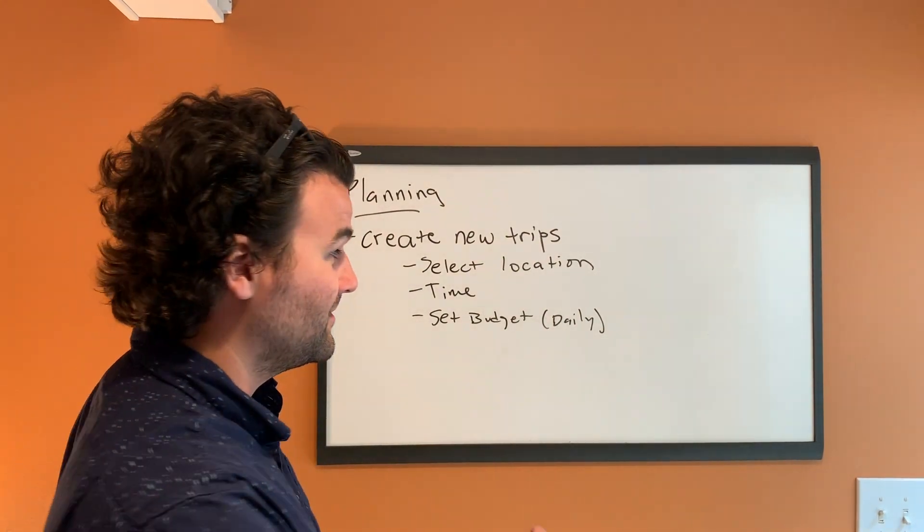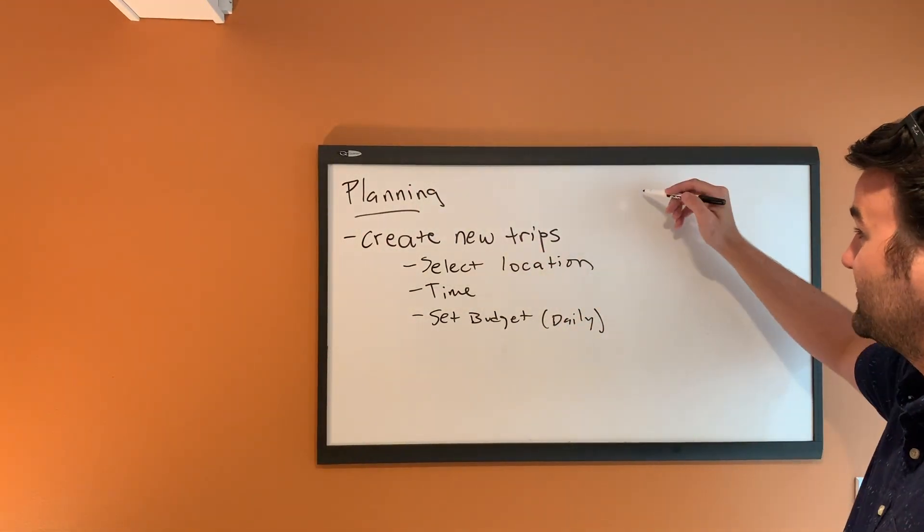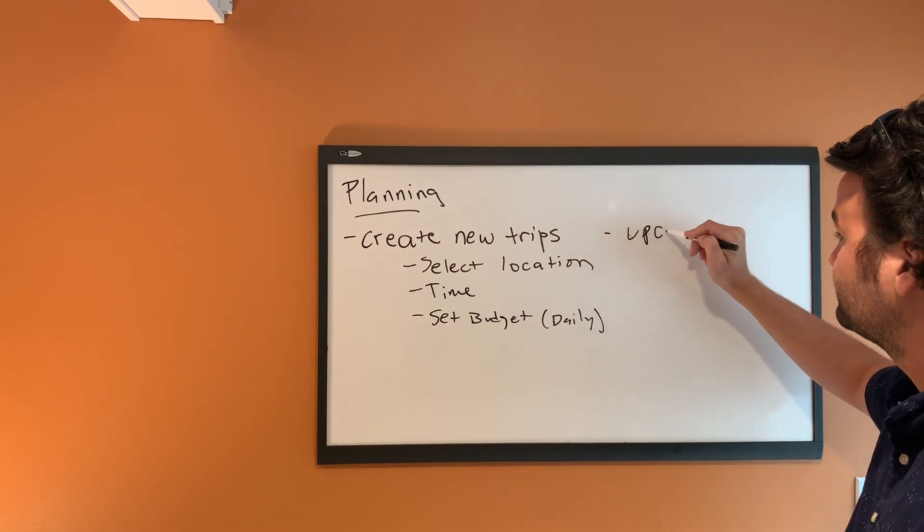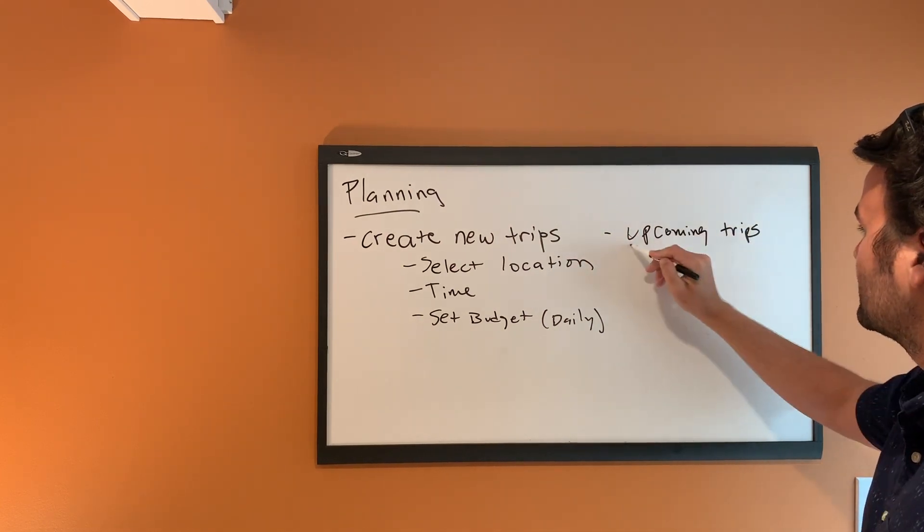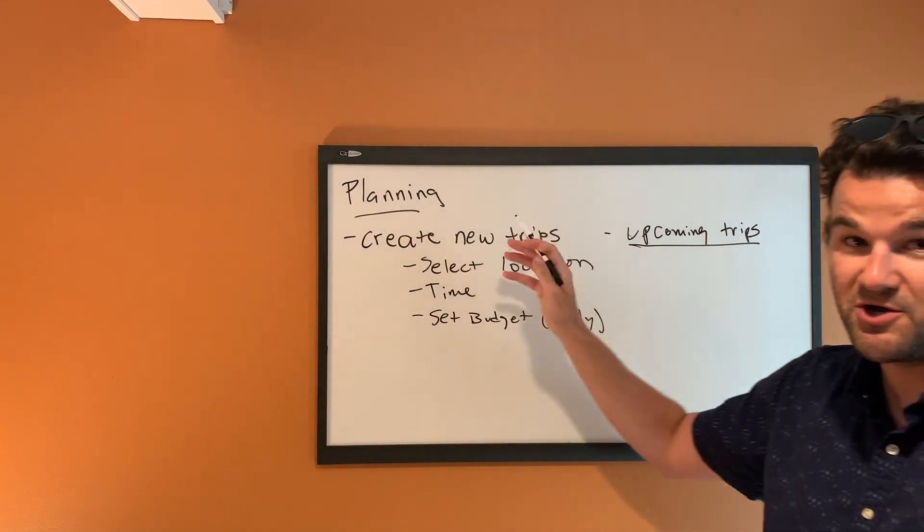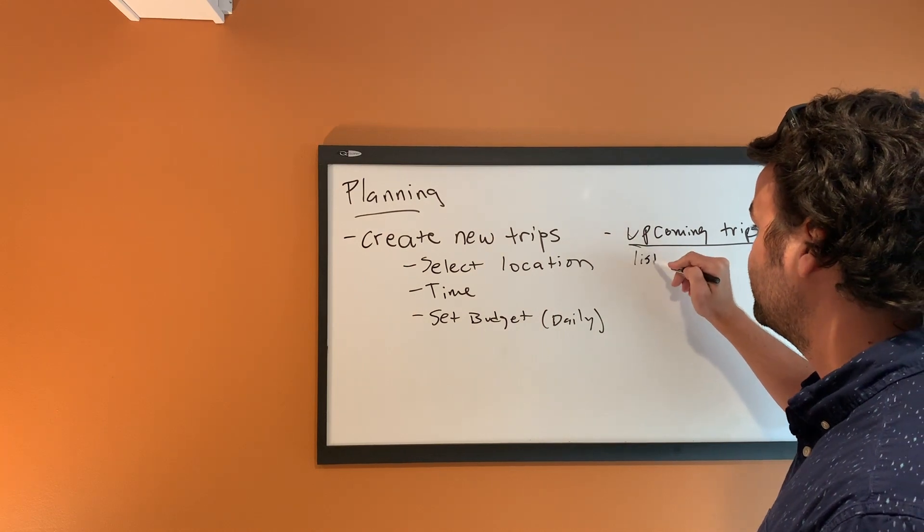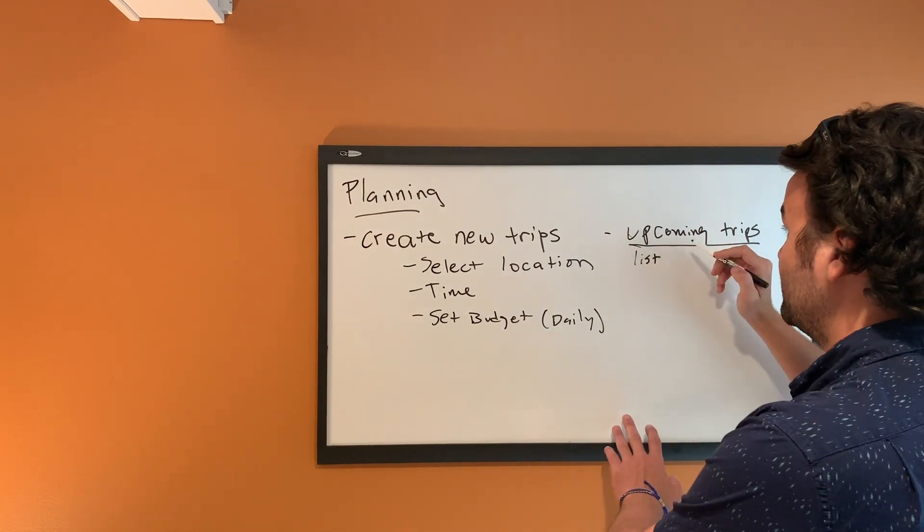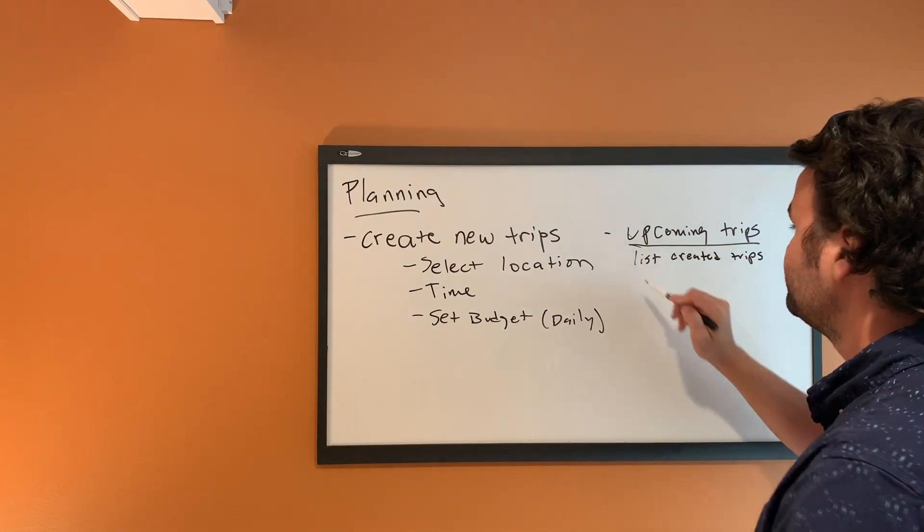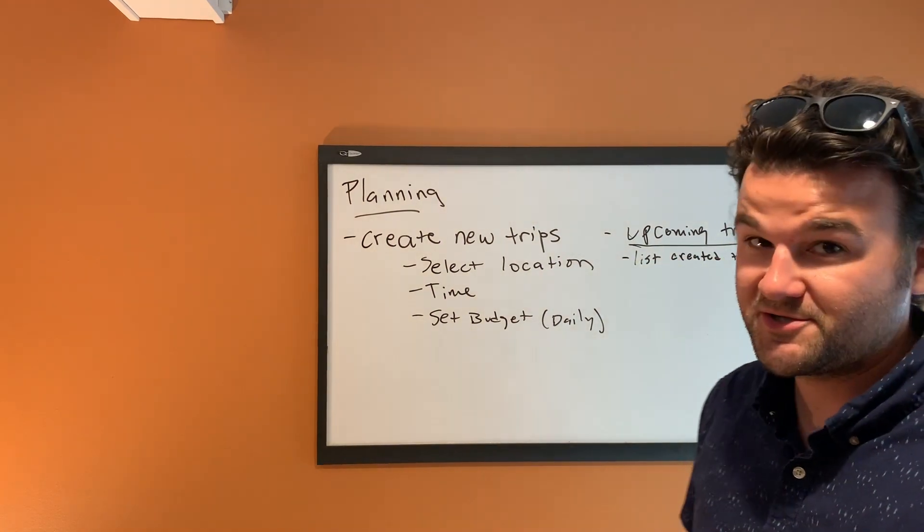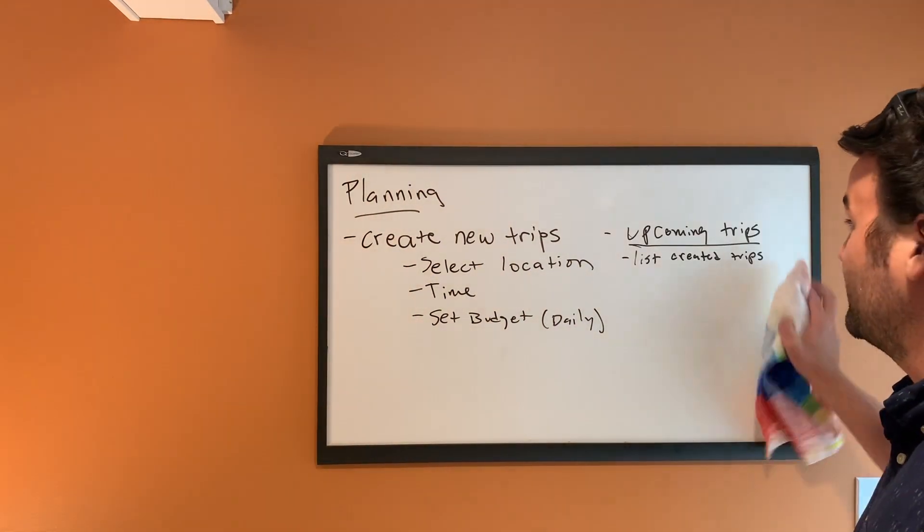So then once this is done, you'll have your trip, you'll have your upcoming trips. So you can create a trip and then you're going to have upcoming trips, right? And that's just going to show this trip that you created and all your trips created. So it's just going to list created trips. All right. So that's good.